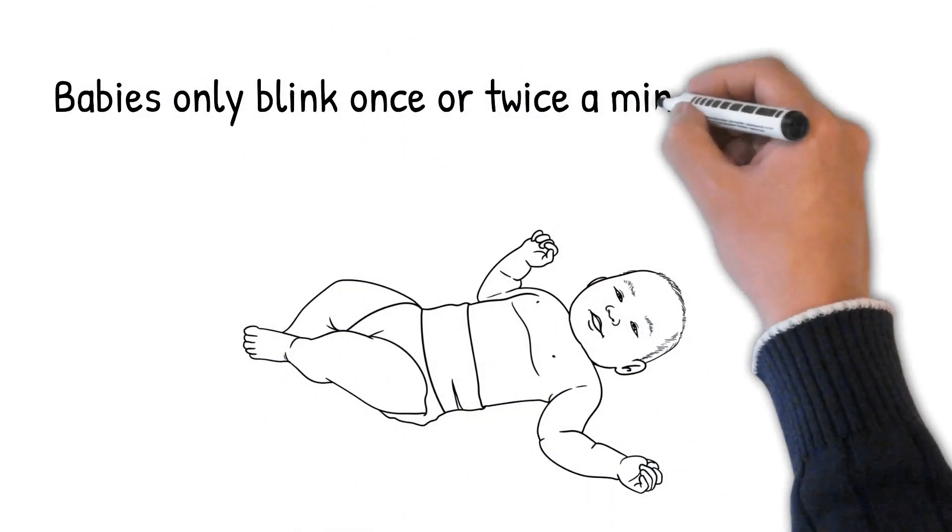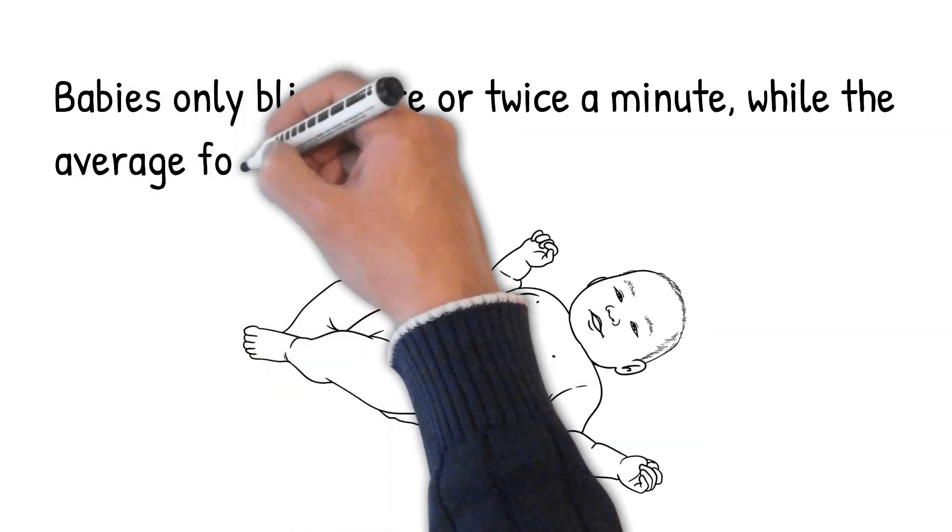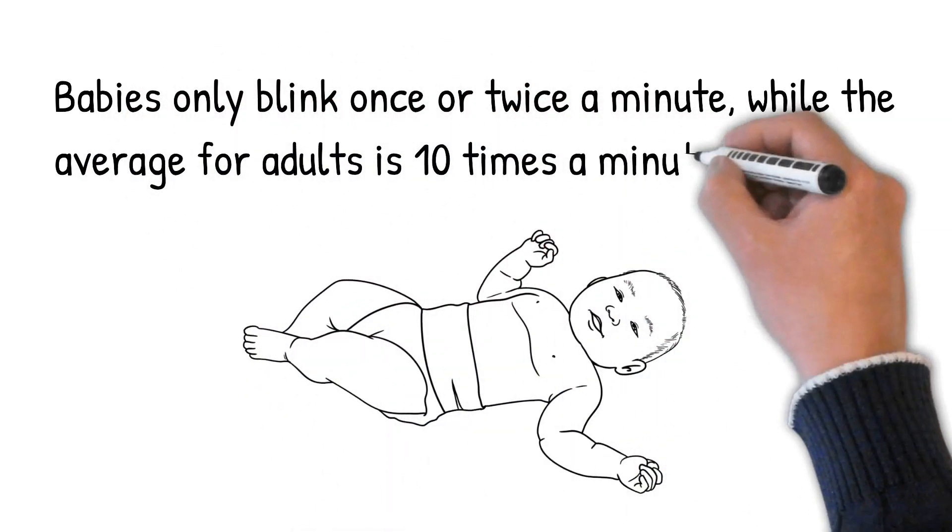Babies only blink once or twice in a minute, while the average for adults is 10 times a minute.